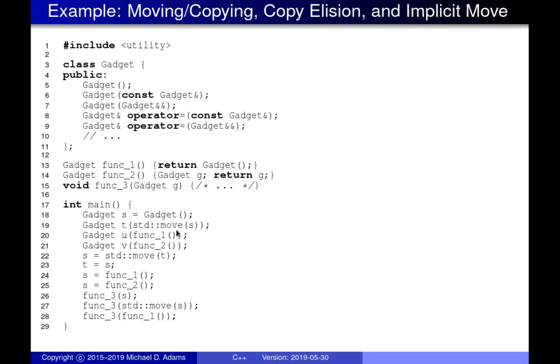Next line: 'Gadget t{std::move(s)}'. The initializer std::move(s) is an xvalue — not a prvalue. To elide the copy, the initializer would need to be a prvalue, which it isn't. So copy elision cannot happen here. Instead, since std::move(s) is an rvalue, the move constructor is used to construct t from s. After this line executes, t is move-constructed from s.